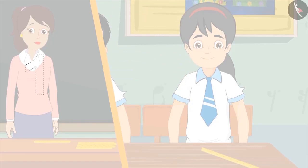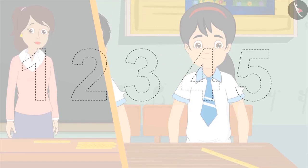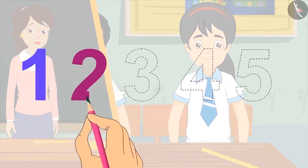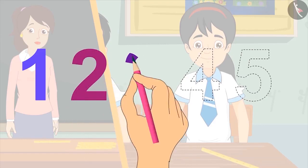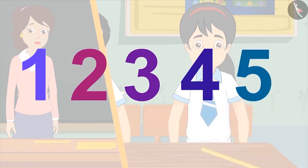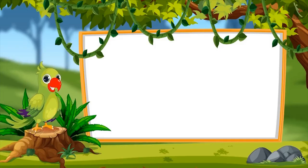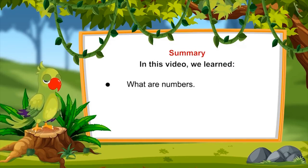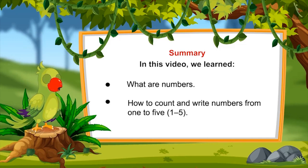You have seen how you can write each number as a special symbol. Let us learn to write these symbols. We write one like this, two like this, three like this, four like this, and five like this. All of you must practice writing these symbols. In this video, we learned what are the numbers and how to count and write numbers from one to five.